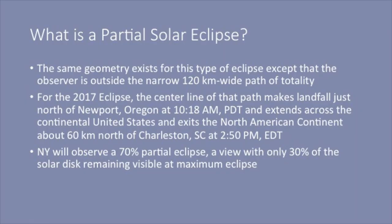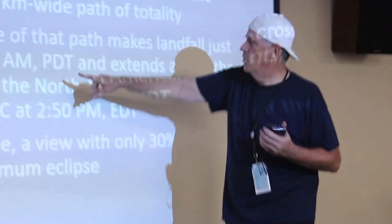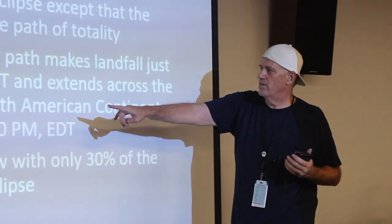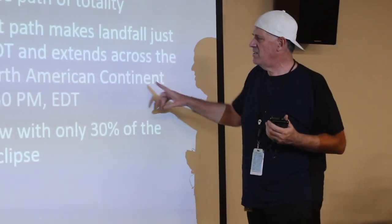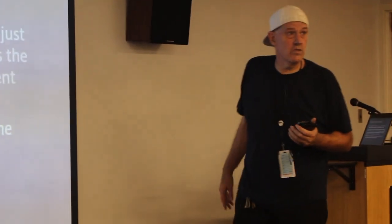What is a partial solar eclipse? The same geometry exists except the observer is outside the narrow 120-kilometer-wide path of totality. For today's eclipse, the centerline makes landfall just north of Newport, Oregon at 10:18 AM Pacific Daylight Time, extends across the continental US, and exits the continent 60 kilometers north of Charleston at 2:50 — about 25 minutes ago. Here in New York, we observed a 70% eclipse.